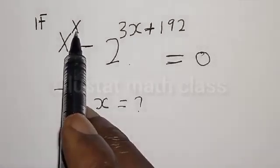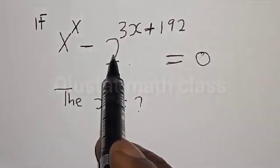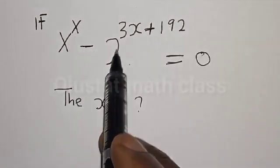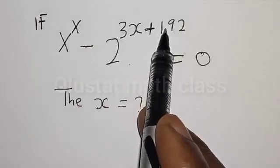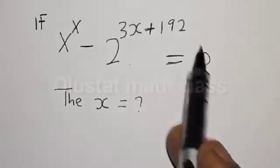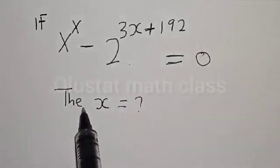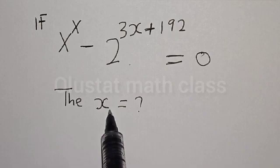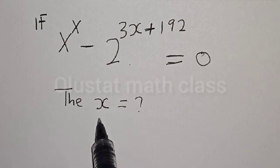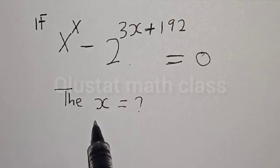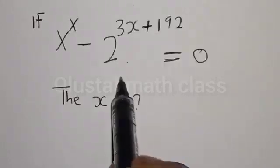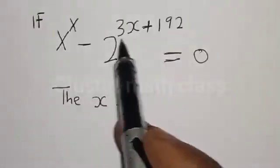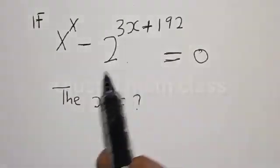If s raised to power x minus 2 raised to power 3s plus 192 is equal to 0, then what is the value of x? Hi everyone, welcome to my class. In today's class, we want to find the value of s from this given exponential equation.